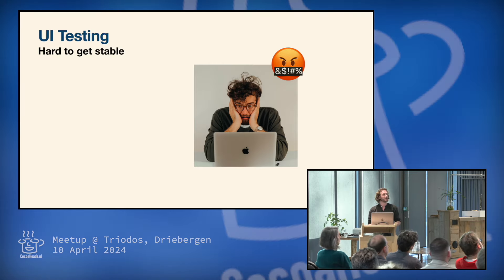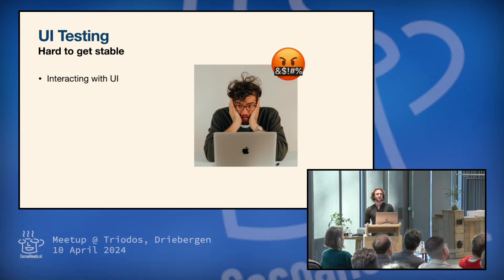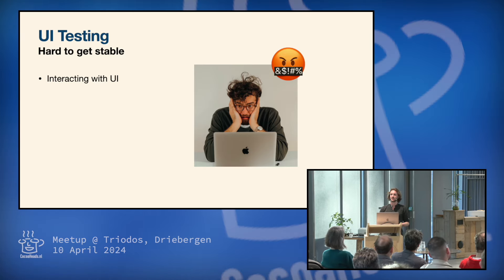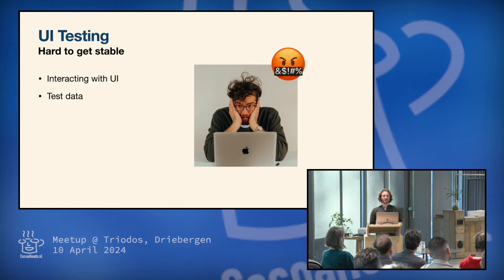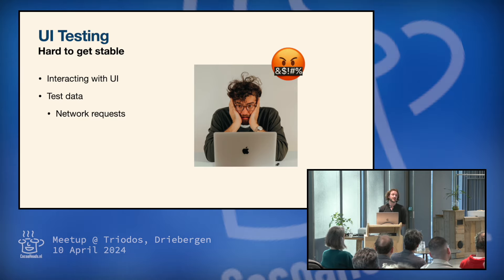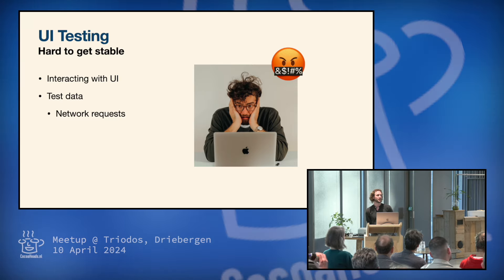So in my experience, there are two main issues why this is so hard. The first one is interacting with UI. The APIs by Apple look great, but a lot of times they're pretty buggy. So it's just hard to get those tests stable. And another thing is test data, especially if your app makes a lot of network requests and relies on the network heavily. There's a dependency on your test data for your test, and if that data changed, then your test stops working or gets flaky.